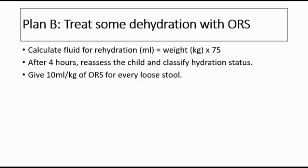For Plan B in moderate dehydration, we treat with ORS. The fluid for rehydration in ml equals weight in kg multiplied by 75. This is because moderate dehydration is assumed to be 7.5% fluid deficit — between mild (5%) and severe (10%). After 4 hours, we reassess and reclassify the child's hydration status, and for every loose stool we give 10 ml per kg of ORS.